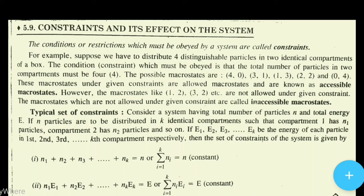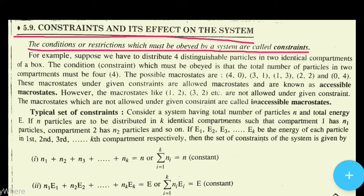Hello everyone, welcome to Learning Science. Today we have constraints and their effect on the system. The conditions or restrictions which must be obeyed by a system are called constraints. So the restrictions or conditions that a system must obey, we call them constraints.